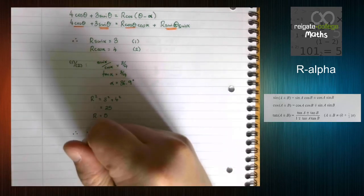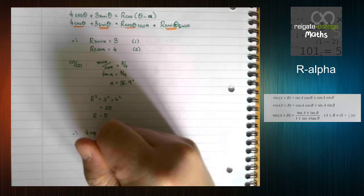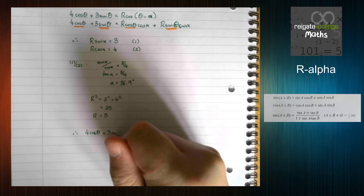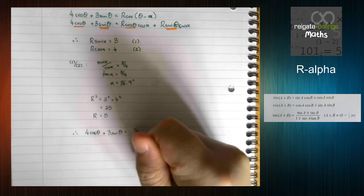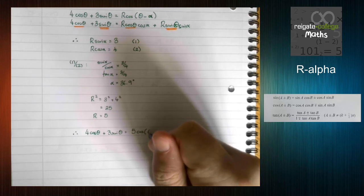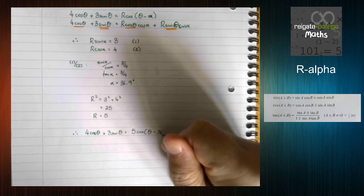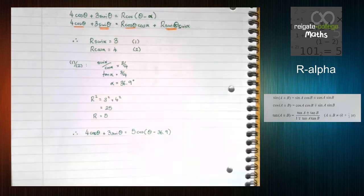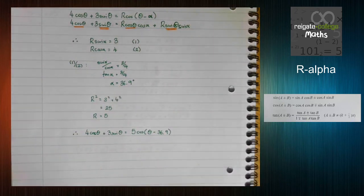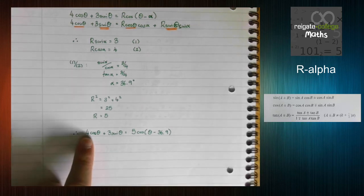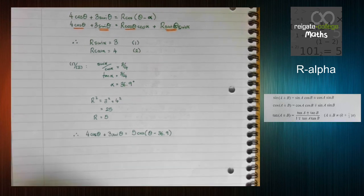So now we know that 4 cos theta plus 3 sin theta is equal to 5 cos theta minus 36.9. The thing with this is, if you're not certain while you're practicing at home, if you're not convinced, stick it in a graphing calculator. You know, use Desmos or Geogebra. They're both free and online. Type in y equals this, and then y equals this, and you'll see that they're the same graph. If they're not, check you're working because you've done something wrong.